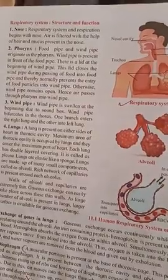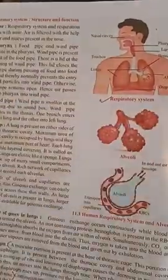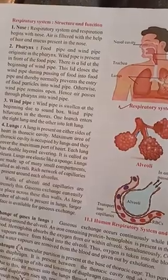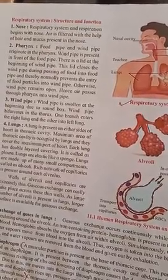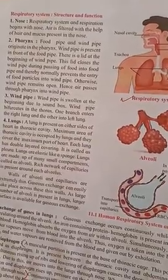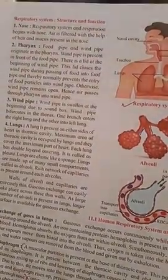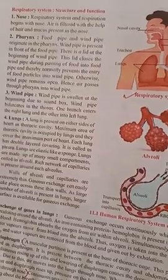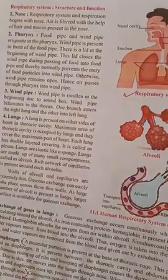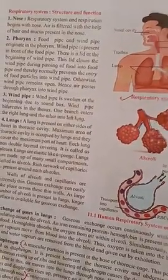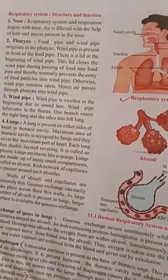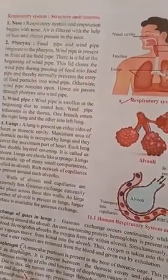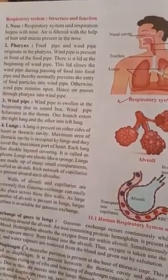Two pipes originate in the pharynx: the food pipe and the windpipe. When we consume food, a flap-like structure closes the windpipe so food enters the food pipe. Normally, the windpipe remains open and air passes through the pharynx into the windpipe. Whenever we swallow food, the windpipe closes temporarily.